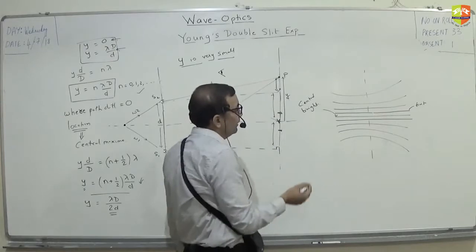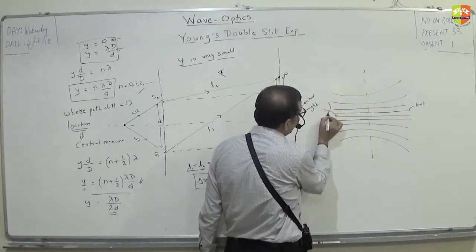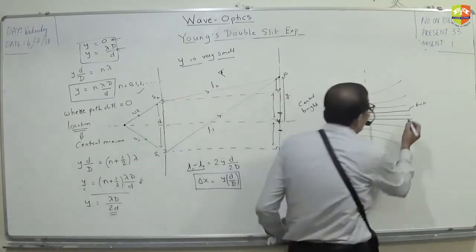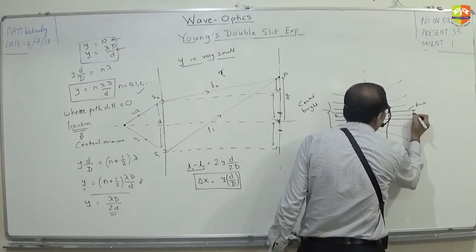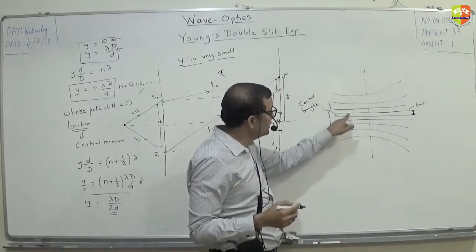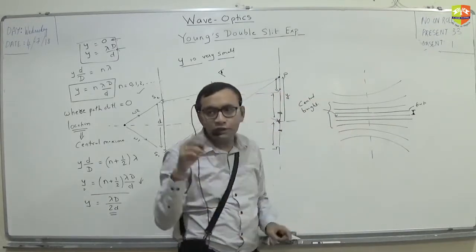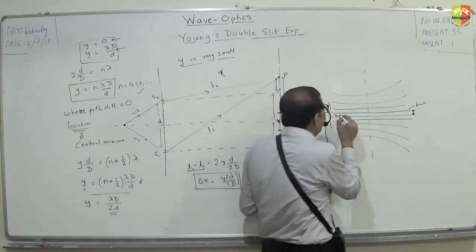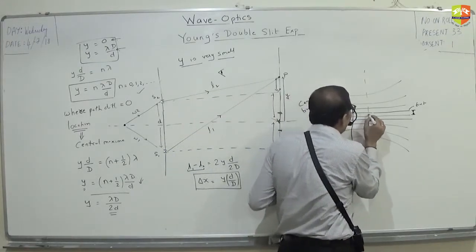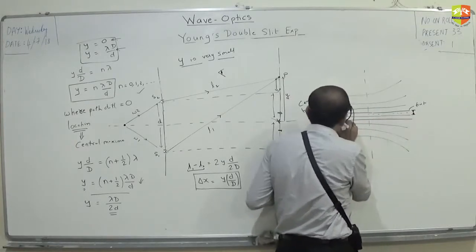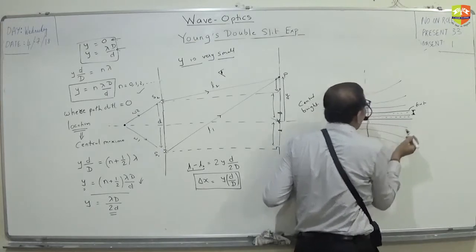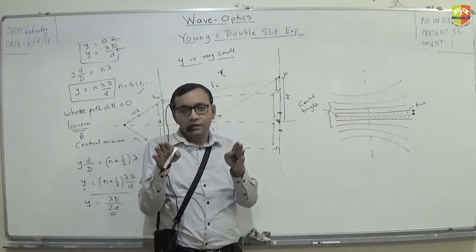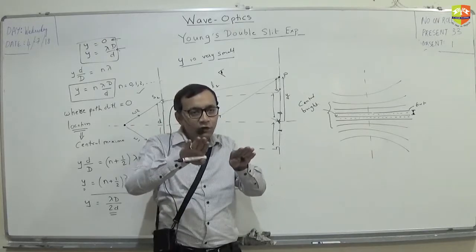You will see this pattern, but if you keep y small, you can see that approximately these lines are straight. The distance between two bright fringes is this. Wherever the dark fringe is — completely dark between these two bright fringes — the center dotted line will be completely dark, and then intensity will gradually increase towards the bright. Between two bright fringes, intensity will gradually fall to zero in between.